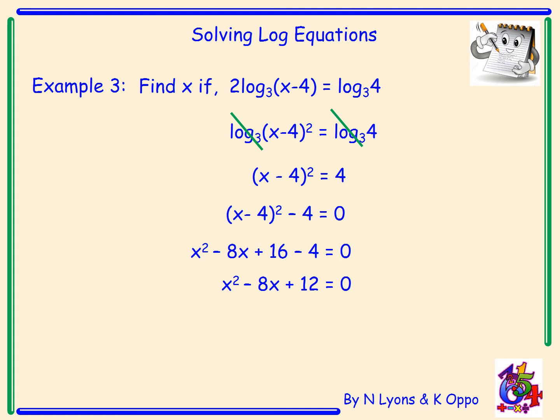Simplifying gives x² − 8x + 12 = 0. Factorizing the quadratic: (x − 6)(x − 2) = 0, so x = 6 and x = 2.